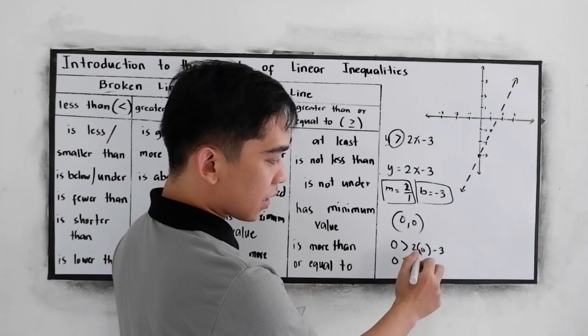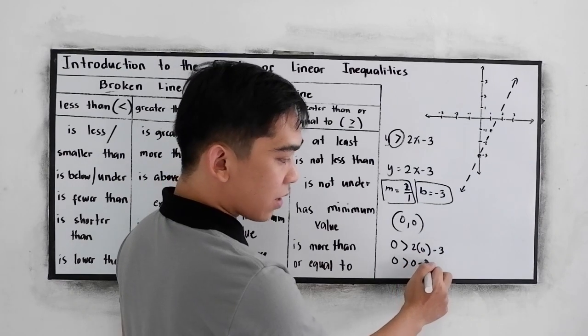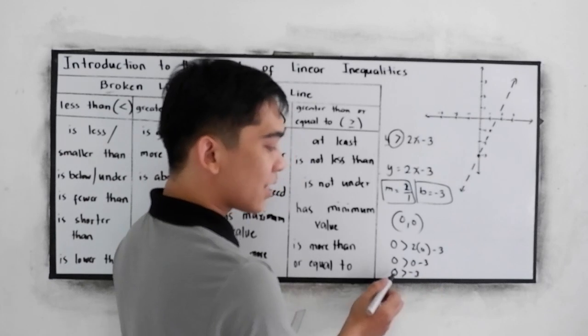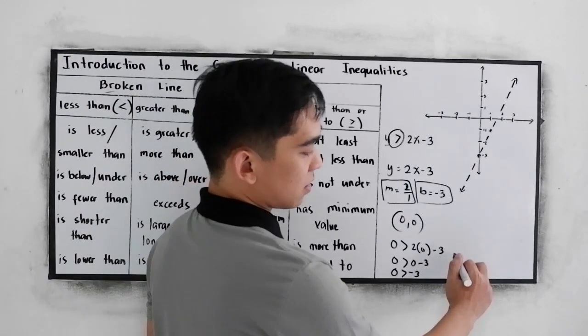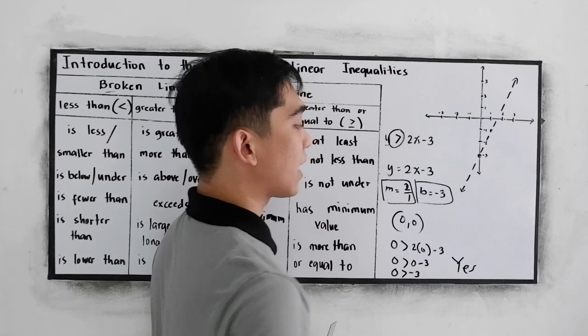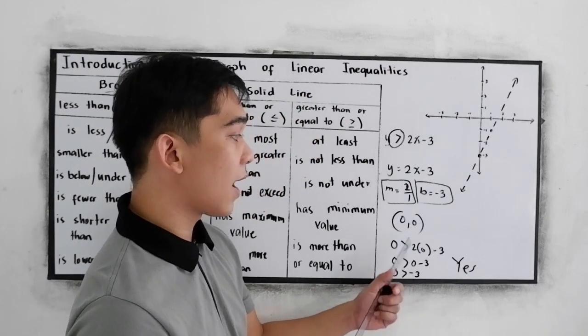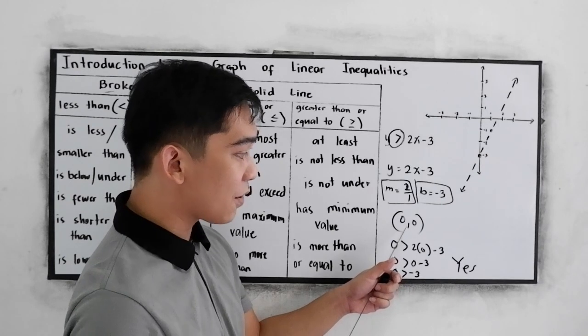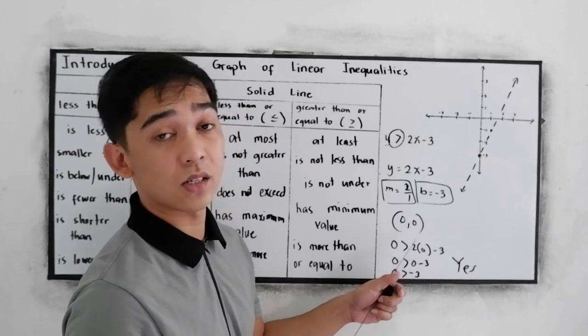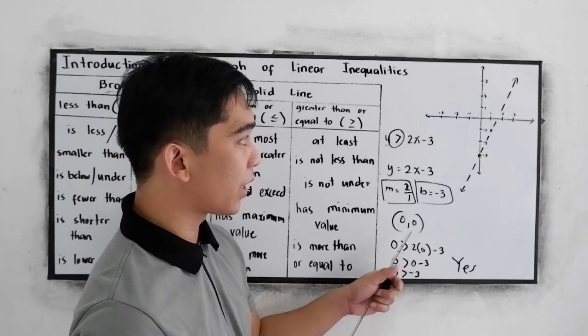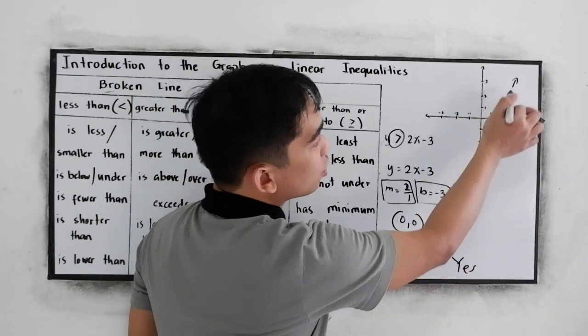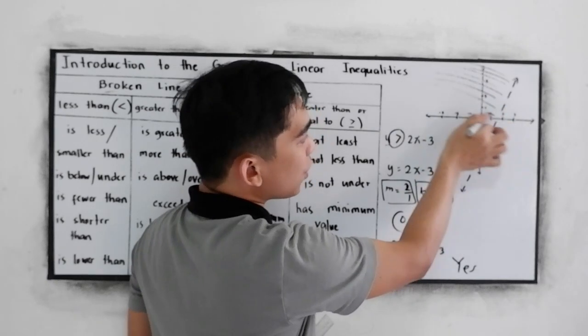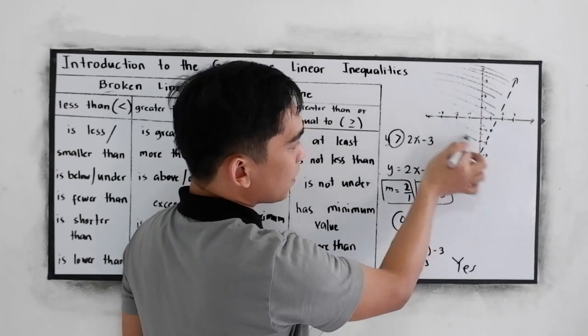So, 0 is greater than 2 times 0, 0 minus 3. 0 greater than negative 3. Is 0 greater than negative 3? Yes. It satisfies our inequality at 0, 0. That means if it satisfies our point, therefore, we need to shade the part that is the origin is included. So, this part.